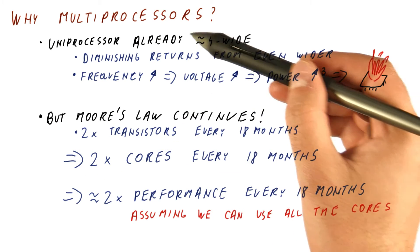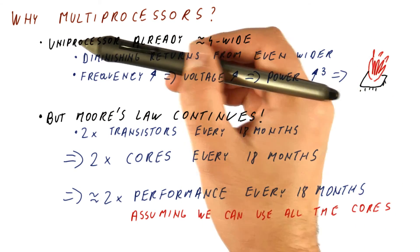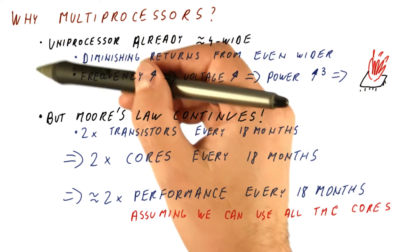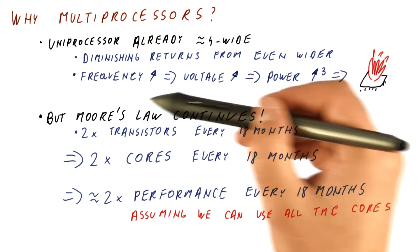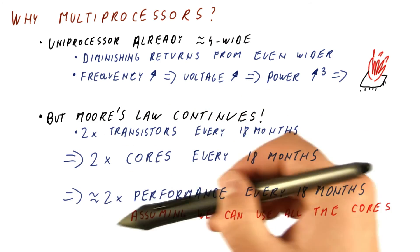But we ran out of things that we can do with uniprocessors. So after a long string of years where we were doing this, just getting better uniprocessors, we had to switch to this if we want to get performance improvement.